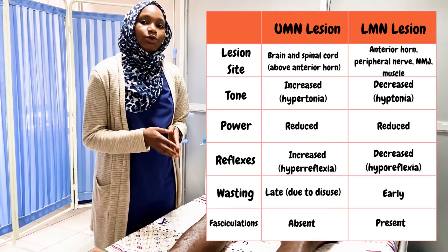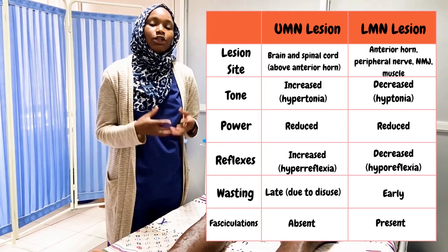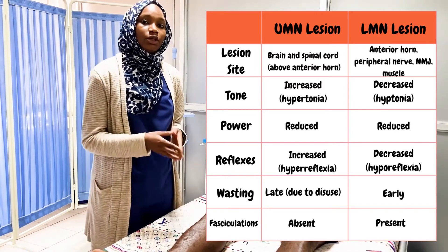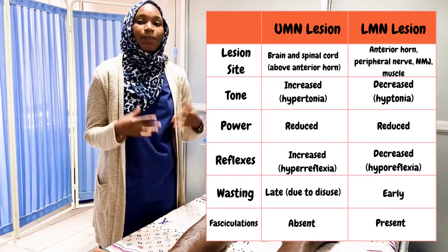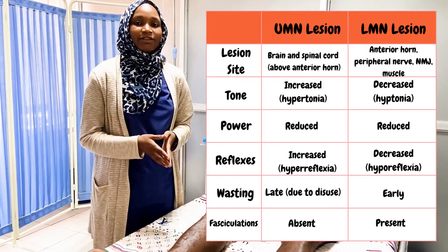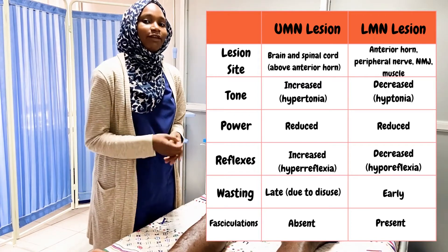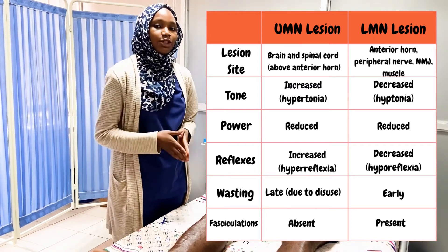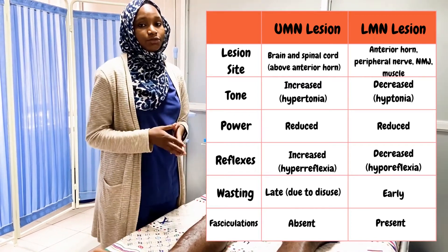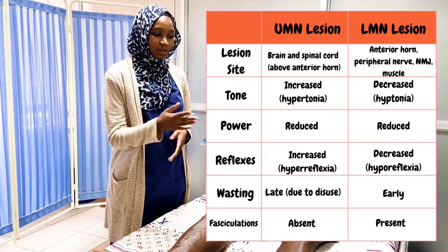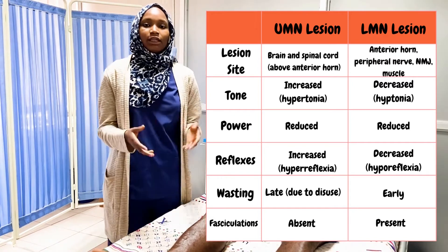Lower motor neuron lesion occurs when there is damage to the peripheral nerves down to the neuromuscular junction down to the muscle itself. Examples include Charcot-Marie-Tooth which can affect the peripheral nerve, myasthenia gravis which can affect the neuromuscular junction, and Duchenne muscular dystrophy which can affect the muscle.